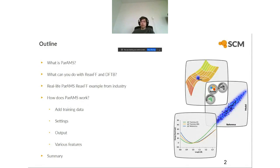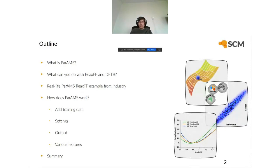First I'll tell you a little bit about what PARAMS is, then why you'd be interested in using it — what can you do with ReaxFF and DFTB — just to give you a few examples from our tutorials. Then I'll show you a real-life PARAMS ReaxFF example from industry where PARAMS was used to solve a problem. Then I'll show you how PARAMS works in practice: how you add training data, what types of training data there can be, how you set up the settings, how you look at the output. I'll finish with some various features and end with a summary.